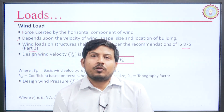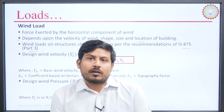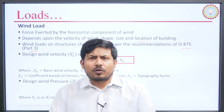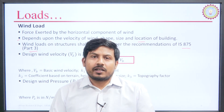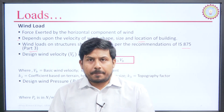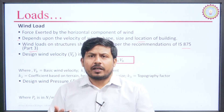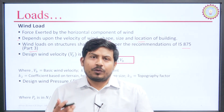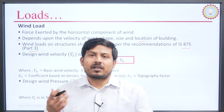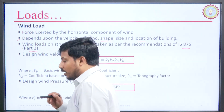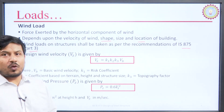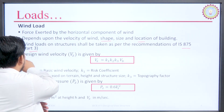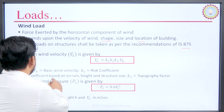Now let us talk about the design wind velocity. This topic contains problems which we will discuss around the seventh or eighth lecture of this series, where we will calculate the wind pressure on a building. To calculate the wind pressure, we must know the design wind velocity Vz. To calculate Vz, we must know the basic wind velocity Vb.